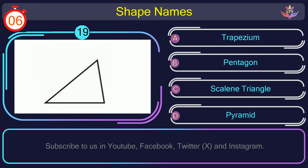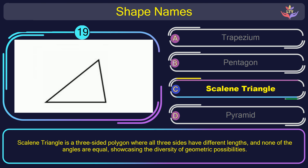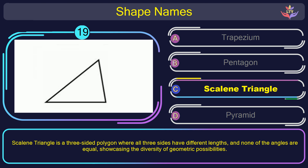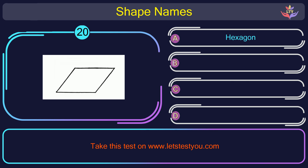Question number 19. Find the name of the shape in this picture. The correct answer is option C. Scalene triangle. Scalene triangle is a three-sided polygon where all three sides have different lengths and none of the angles are equal, showcasing the diversity of geometric possibilities.